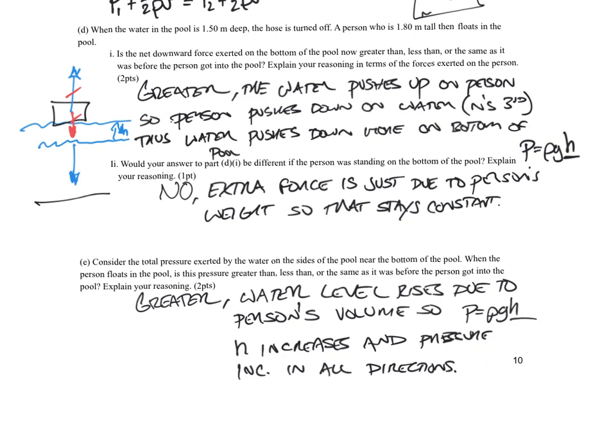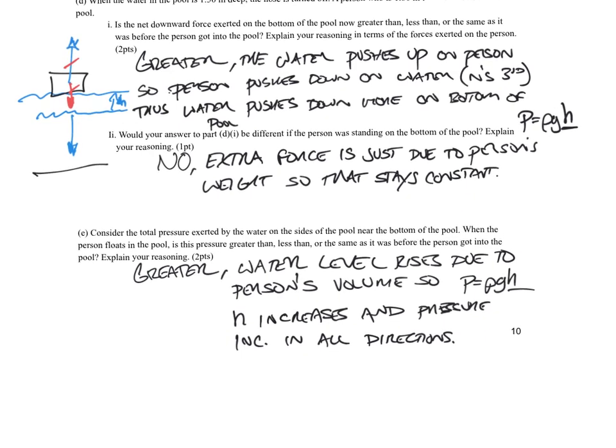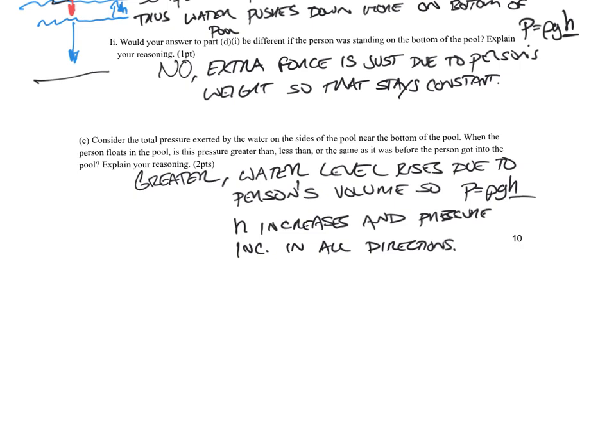So consider the total pressure exerted on the water on the sides. What's going to happen as we add that person? Basically, pressure acts in all directions. So if we have a container, the deeper that water is, we have pressure pointing in all directions. And that pressure is due to height. That pressure is due to height. So if we increase the water level here by that person getting in, these arrows are all going to increase as well.